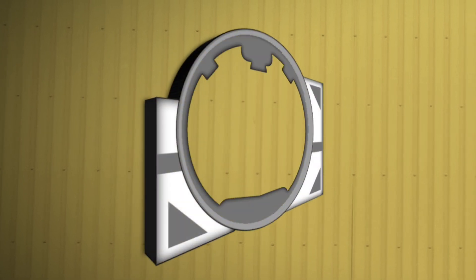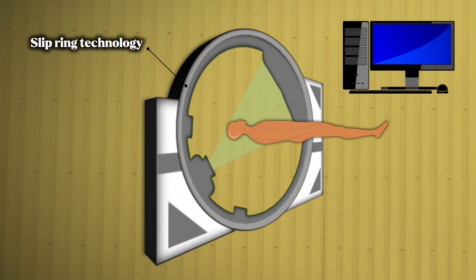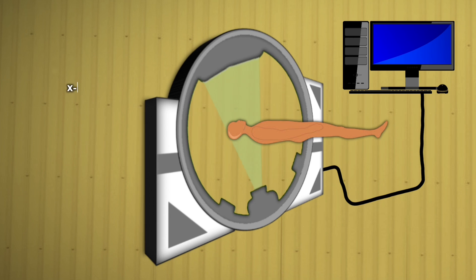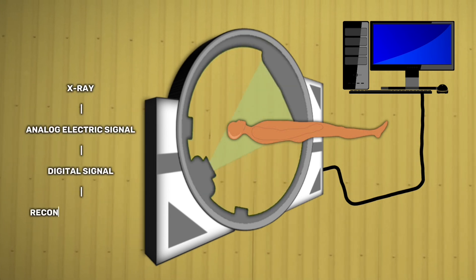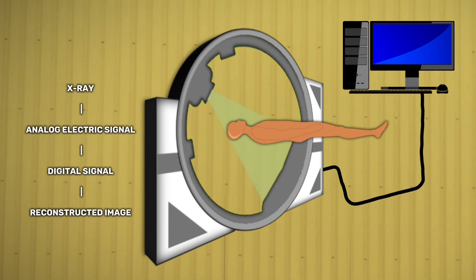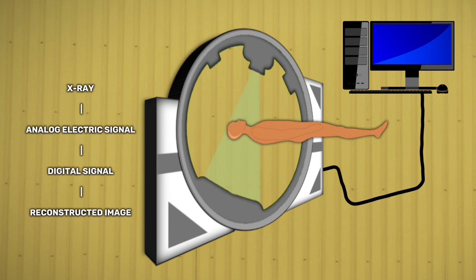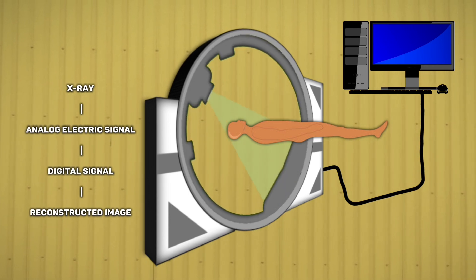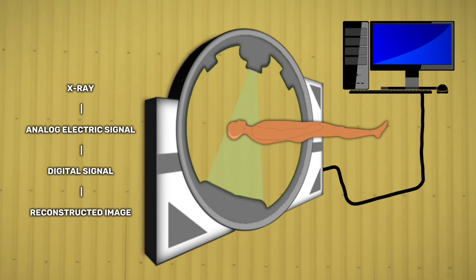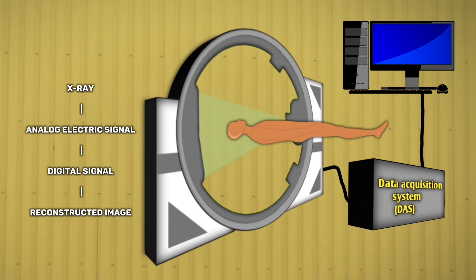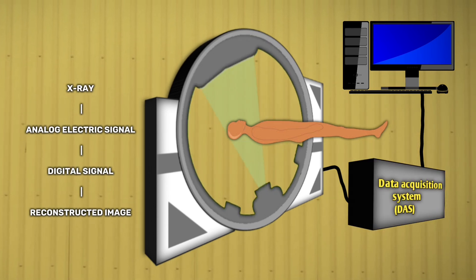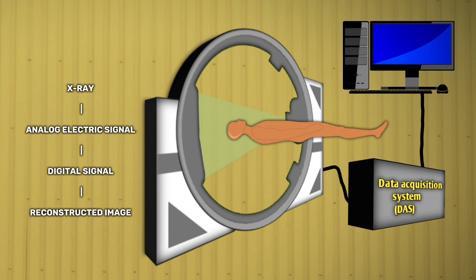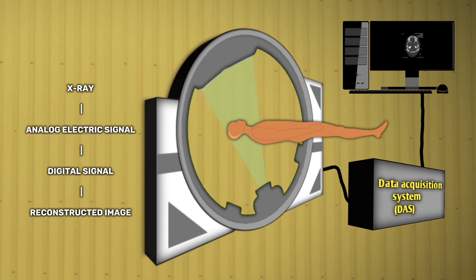When x-rays pass through the patient and reach the detectors, they convert them into electric signals. The data acquisition system receives the analog electric signals from the detectors, amplifies them, and converts them into digital data through an analog-to-digital converter.